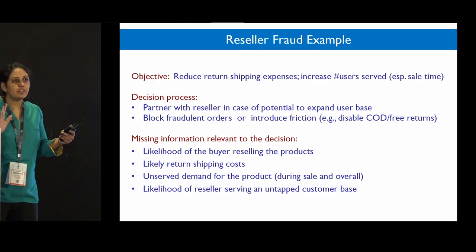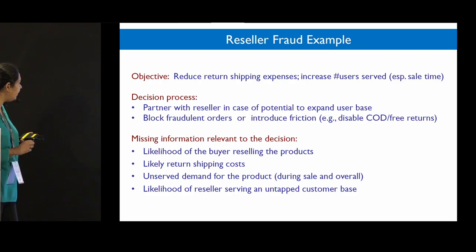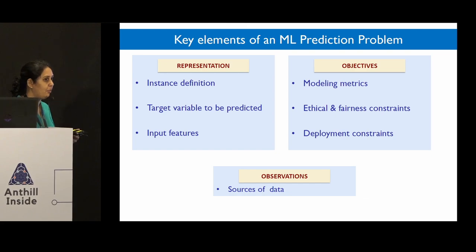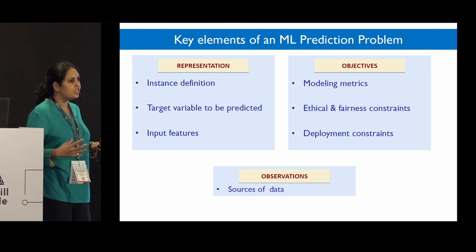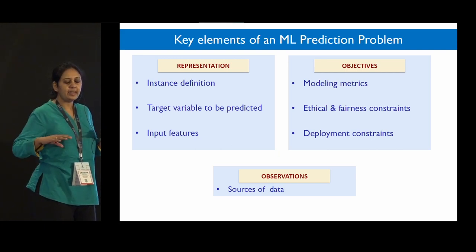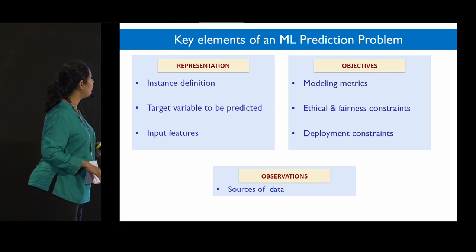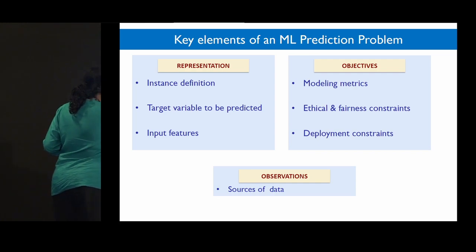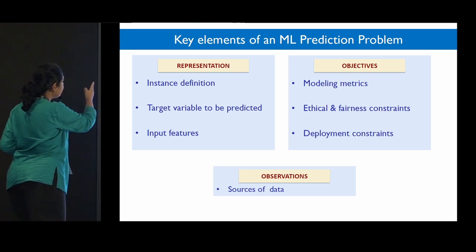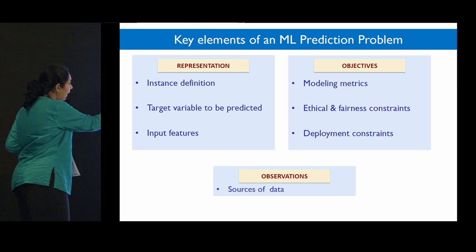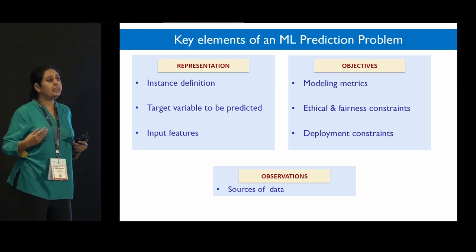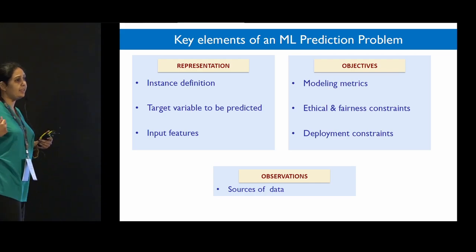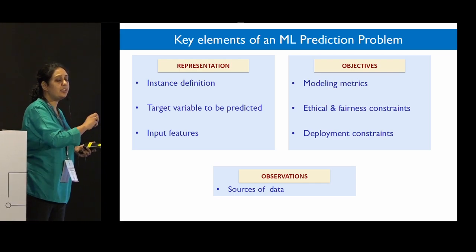So now to optimize this decision, we need multiple pieces of missing information: the likelihood of resale, the likely return costs, what the unserved demand for a product is, and whether that reseller is serving some untapped customer base. This is a very different picture than what we had earlier — we have multiple ML problems, and we will have to solve all of them and combine the predictions to come up with an optimal decision. Now let's see how we would solve one particular problem like likelihood of resale. For each problem, there are multiple key elements: instances, targets, input features, data sources, objectives, metrics, and constraints — and we have to make all these choices to specify the problem.